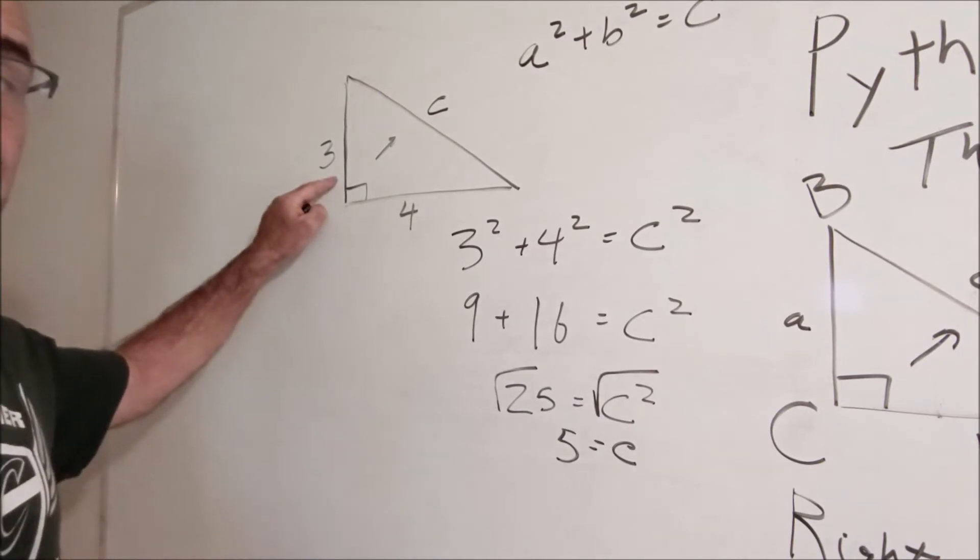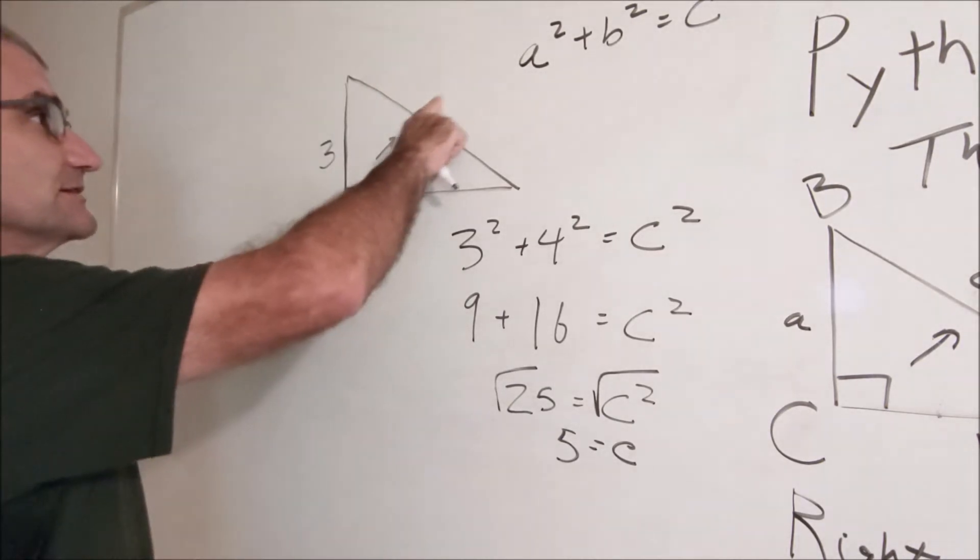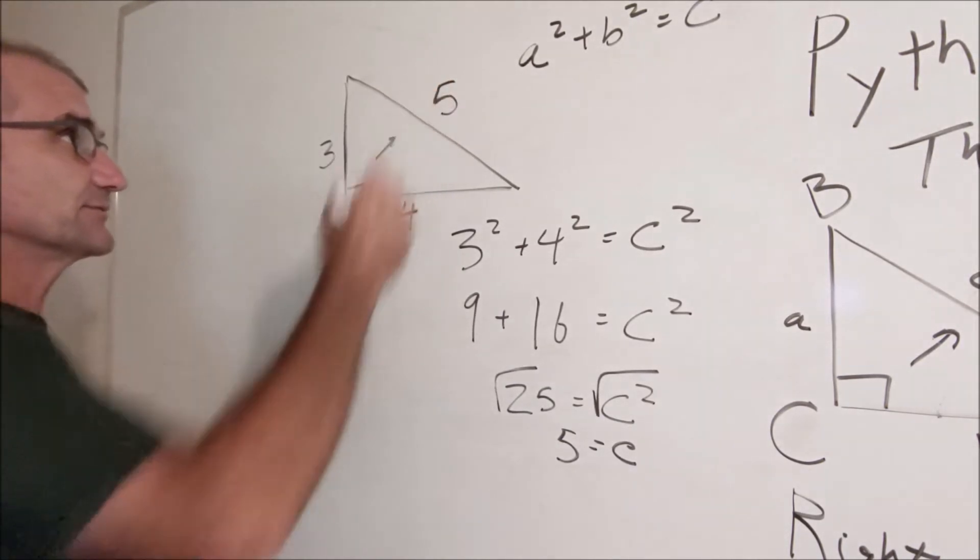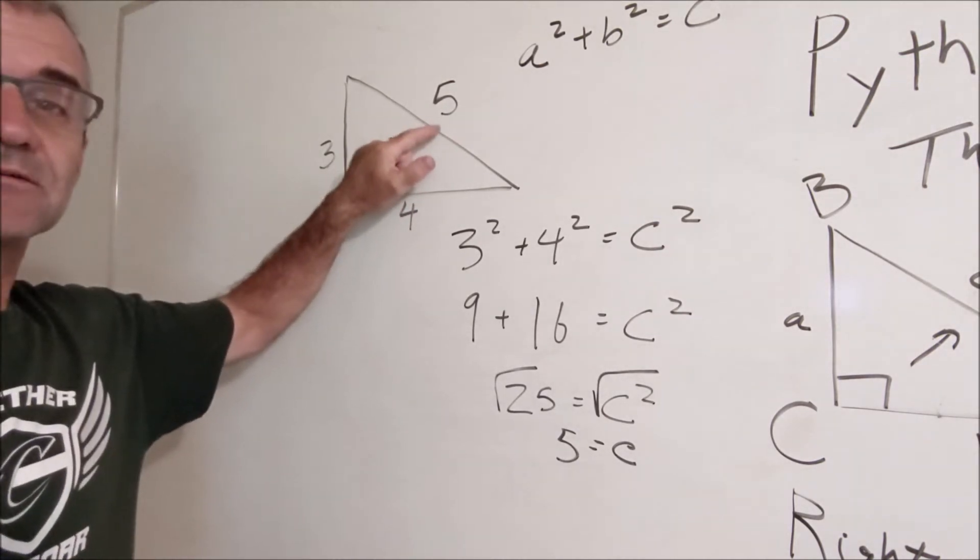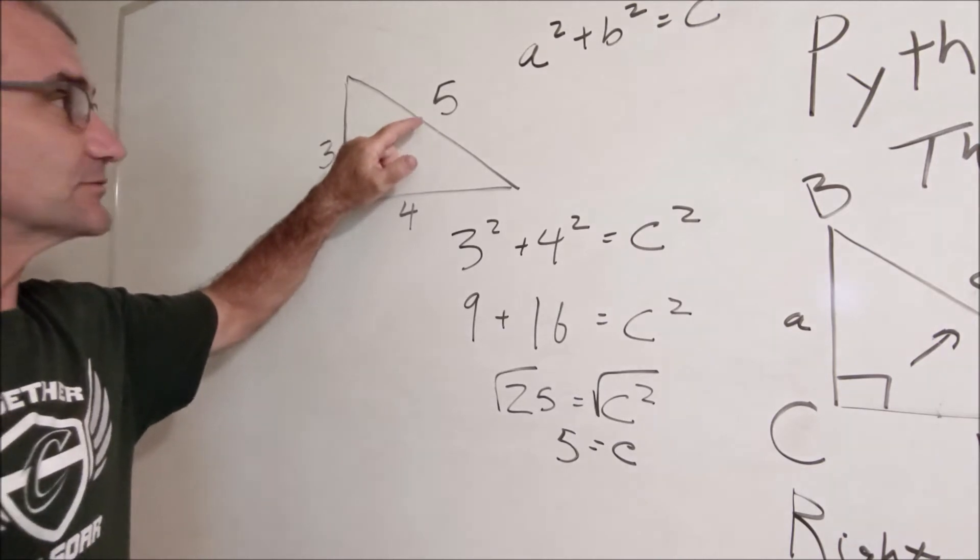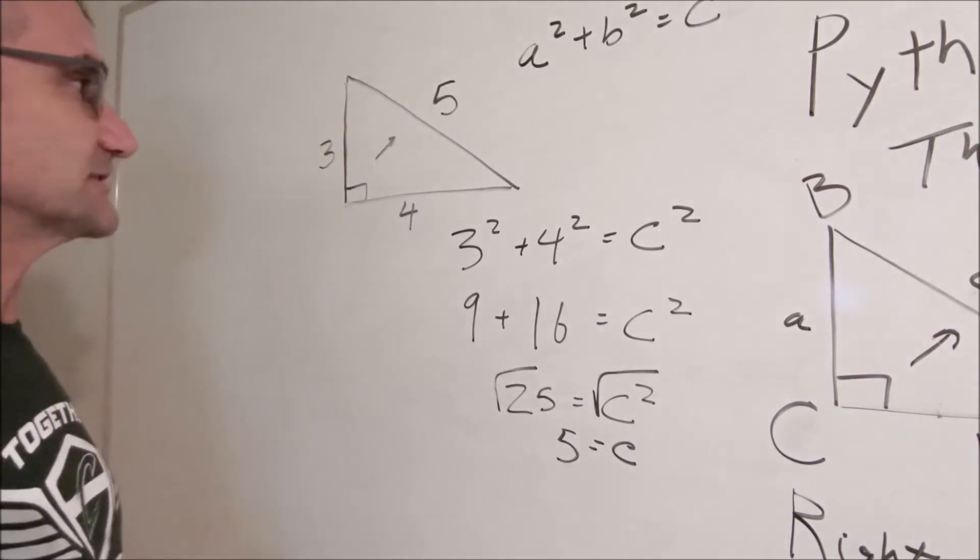So if this leg were three, this leg were four, this leg I could find is five. So that's the Pythagorean Theorem. If there are numbers that don't work out to be whole numbers when they're square rooted, you could always use the calculator.